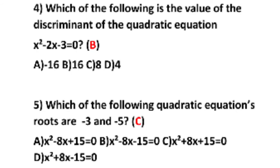Next, fourth question: which of the following is the value of the discriminant of the quadratic equation? Just as we discussed in the third question, the discriminant means B square minus 4AC. You see the equation and find A is equal to 1, B is equal to minus 2, C is equal to minus 3. You can find B square minus 4AC and you get the value of 16. So B is the right answer for the fourth question. I am not showing the calculations here, children — you have to do the calculations on your own.